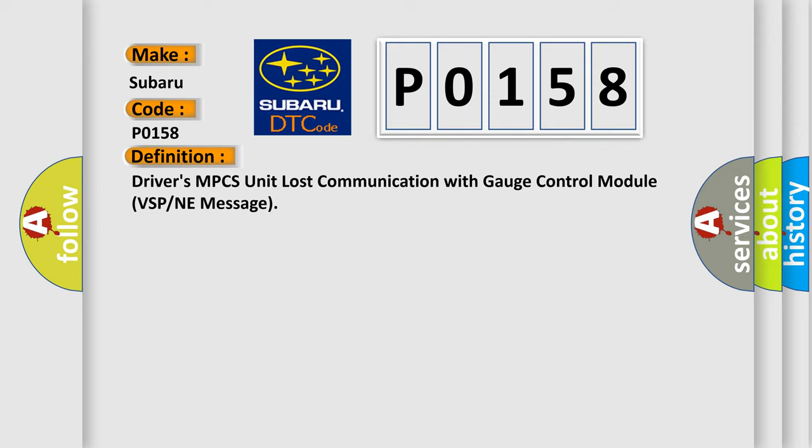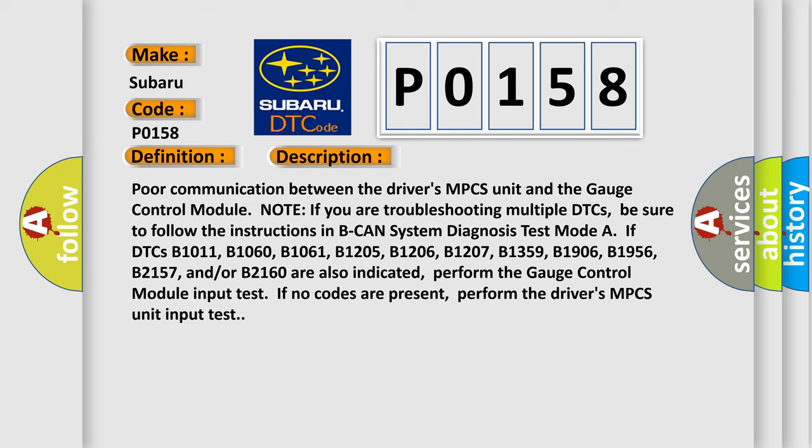This is a short description of this DTC code: poor communication between the driver's MPCS unit and the gauge control module. Note: if you are troubleshooting multiple DTCs, be sure to follow the instructions in BCAN system diagnosis test mode A if DTCs B1011, B1060, B1061, B1205, B1206, B1207, B1359, B1906, B1956, B2157, and/or B2160 are also indicated. Perform the gauge control module input test. If no codes are present, perform the driver's MPCS unit input test.